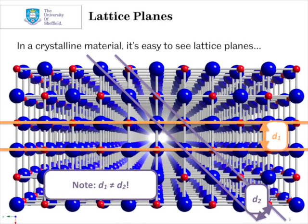Now these lattice planes don't really exist, but it's very easy to imagine them running through a crystalline material. If we take the example of rock salt here, sodium chloride, it's very easy for us to see planes of atoms running in the horizontal direction, as indicated by the orange lines. And in this case, these are separated by some distance, which we can call D1.